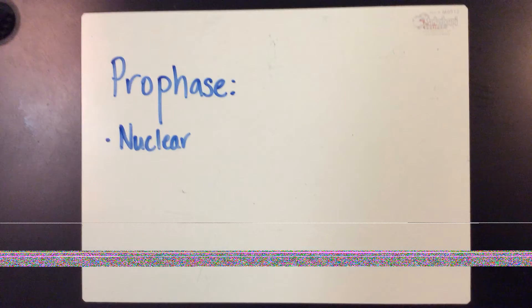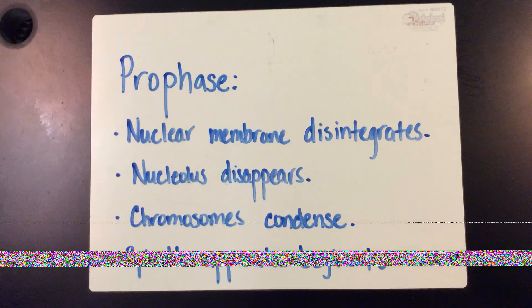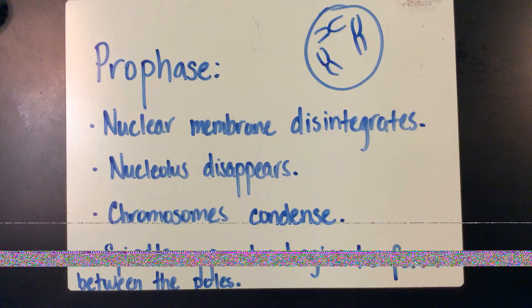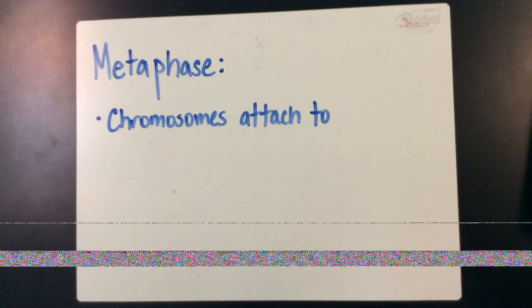Prophase: nuclear membrane disintegrates, nucleus disappears, chromosomes condense, and spindle apparatus begins to form. Metaphase: chromosomes attach to the spindle apparatus.